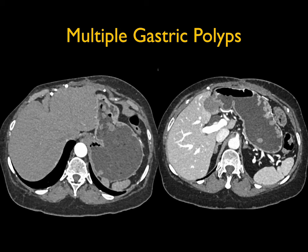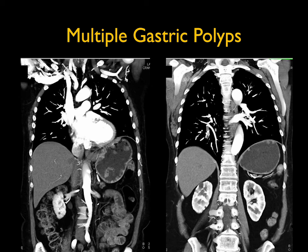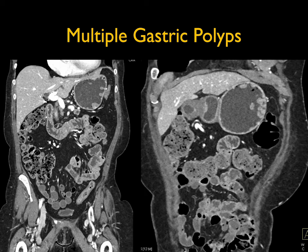We also think about multiple enhancing lesions in the stomach — gastrinomas with multiple gastric carcinoid tumors. They tend to be very vascular. Looking at some of the images here, there is very nice visualization of the lesions with good gastric distension. You can see it nicely on the coronal views, particularly in the fundus and body of the stomach. The lesions are very nicely shown.